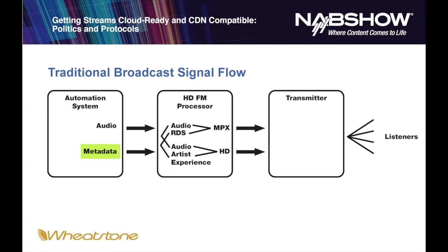Metadata also includes things like ads, sweepers, liners — things which are not songs. So the automation system is pumping out both audio and metadata. This is being received by the HD/FM processor. The audio goes into the multiplex signal and also to the HD signal. The metadata is turned into RDS on one hand, which is part of the MPX signal for the FM, and then it's turned into artist experience data for the HD signal. Both of these go to the transmitter, which broadcasts to all listeners.